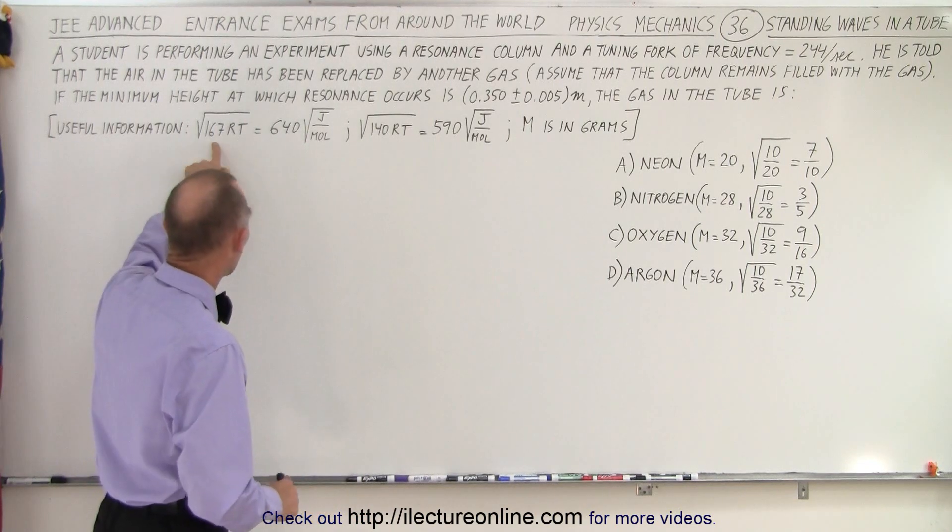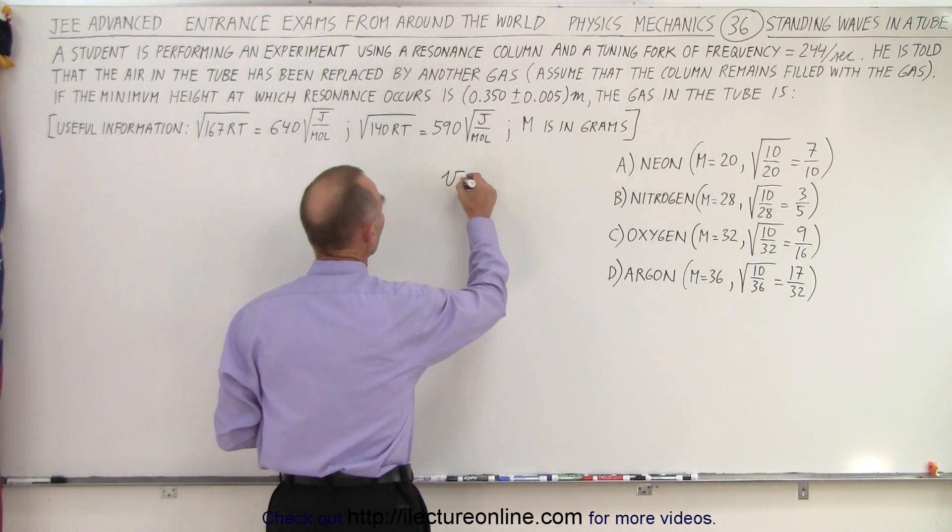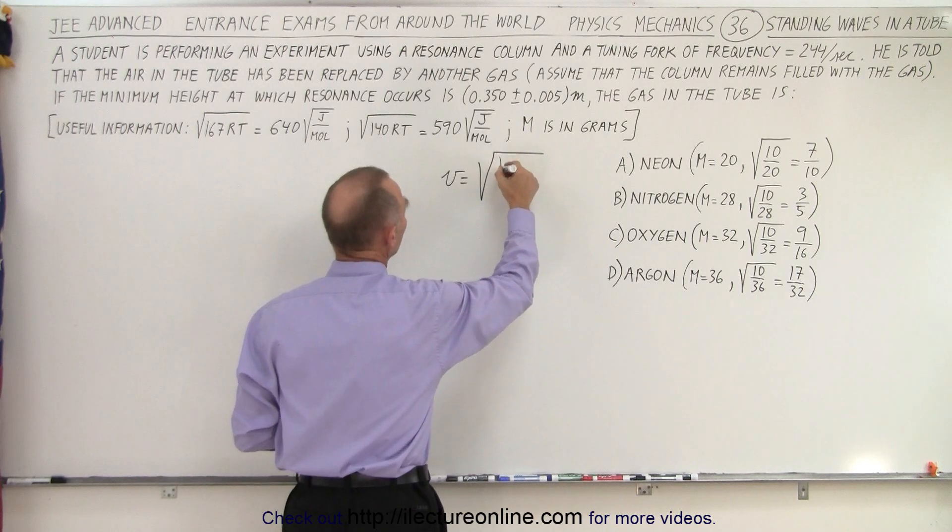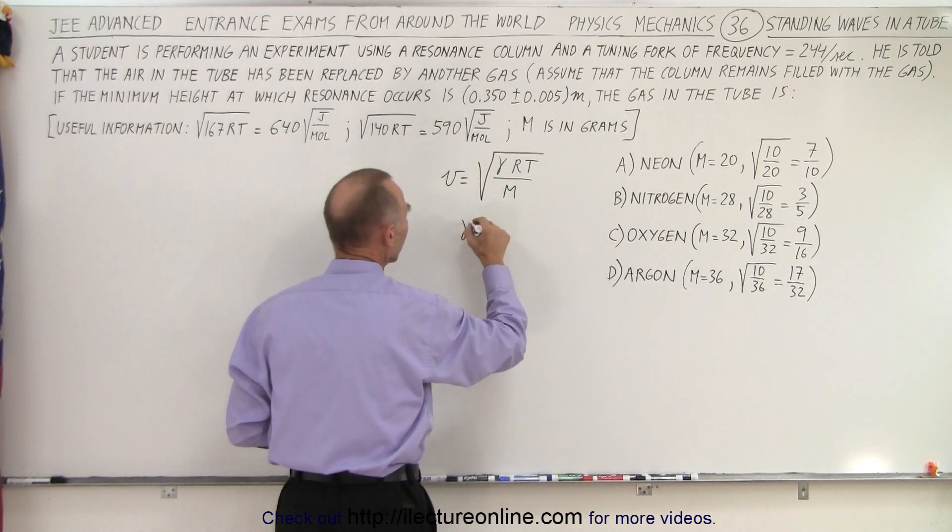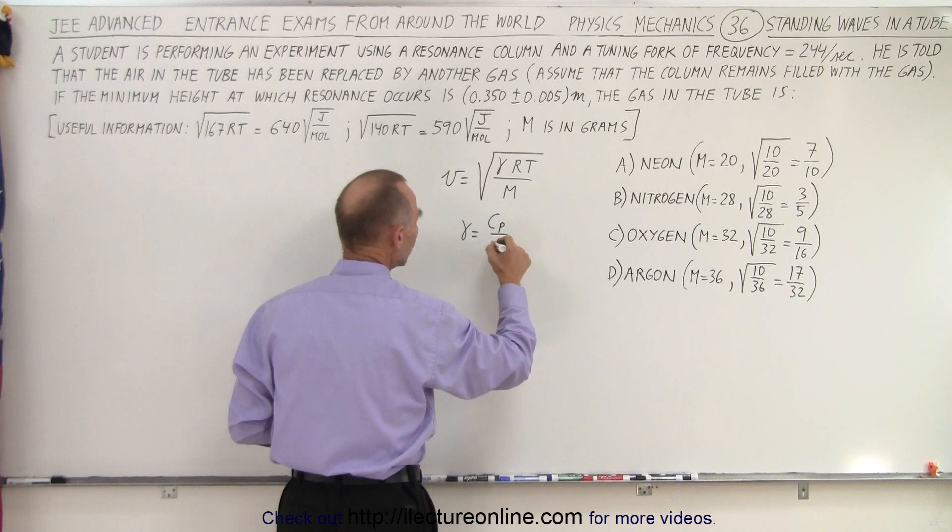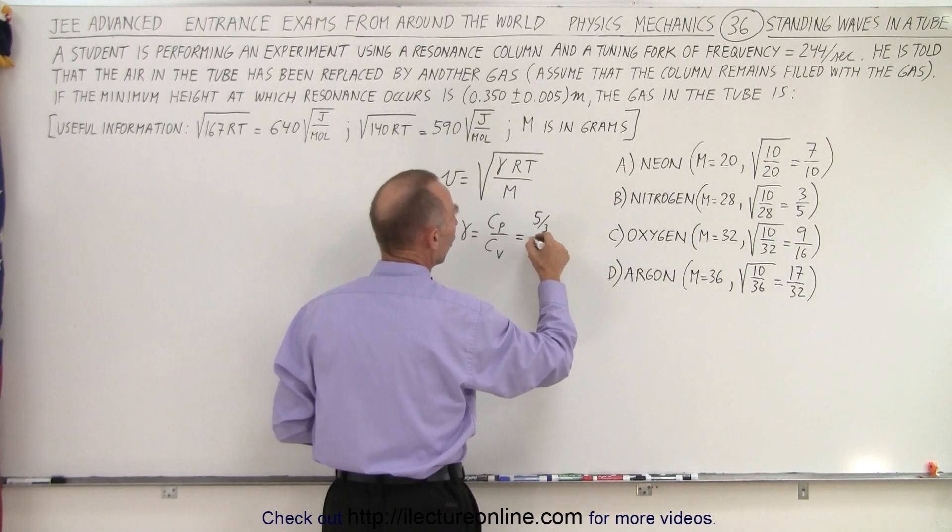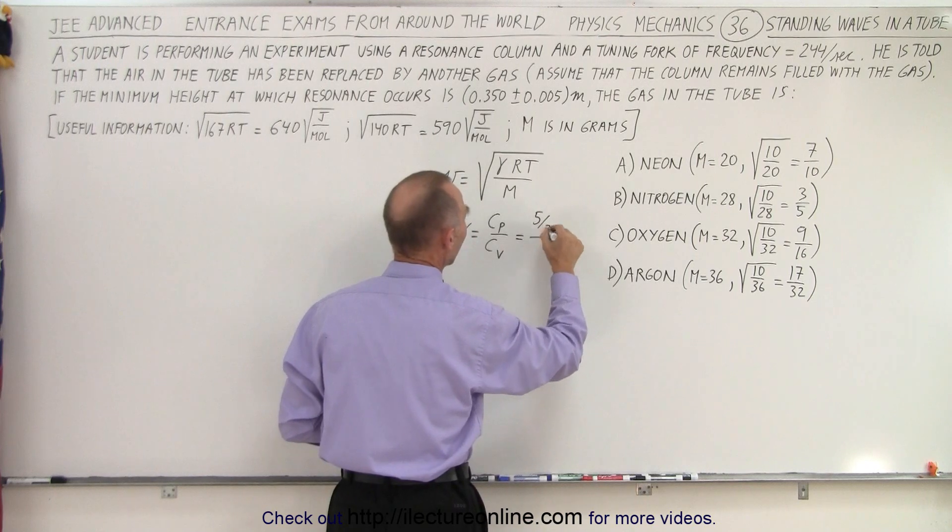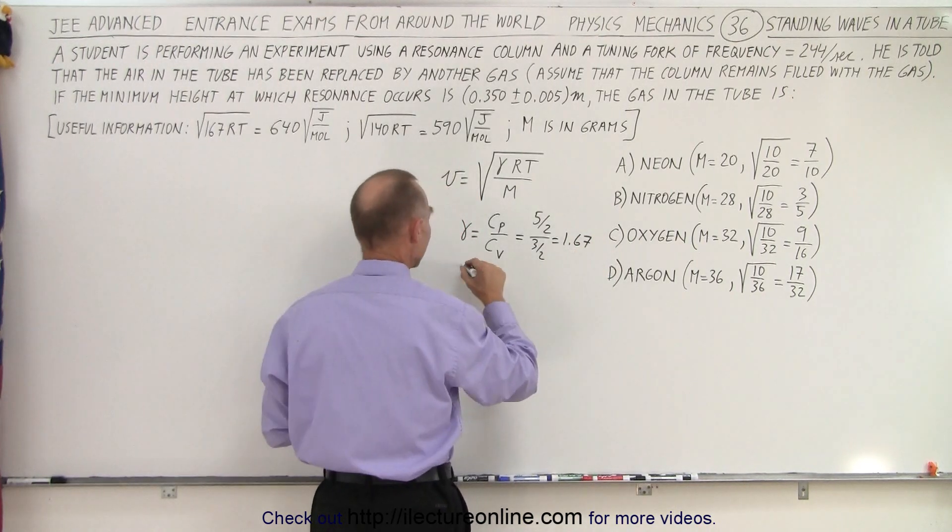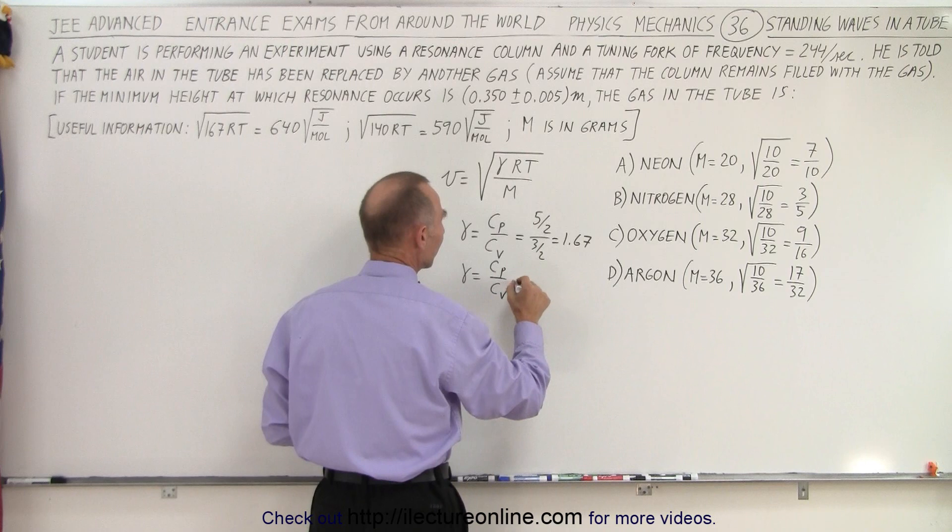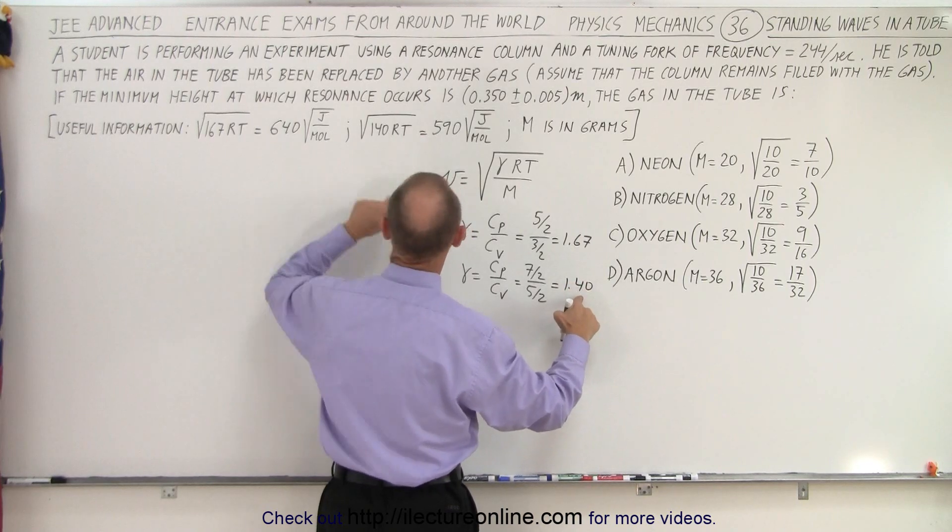The numbers 167 and 140 should ring a bell because we know that the velocity of sound in a gas is equal to gamma times R times T divided by the molar mass, where gamma is defined as C sub P over C sub V, which for monatomic gas is five halves over three halves, which is equal to 1.67, and for a diatomic gas is 7 over 2 divided by 5 over 2, which is equal to 1.40.